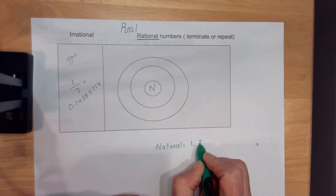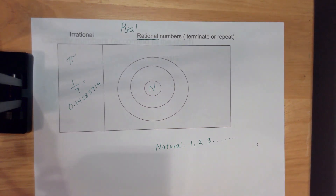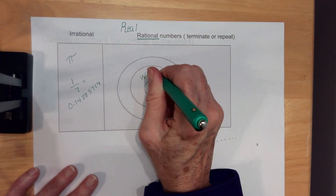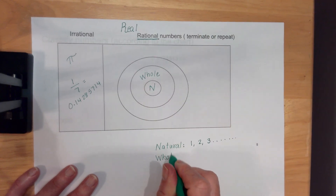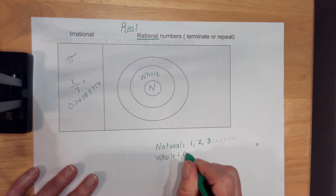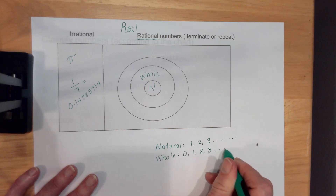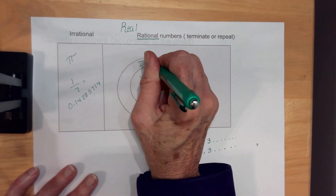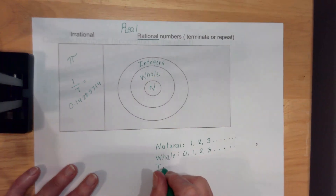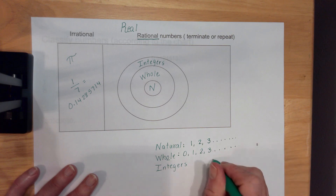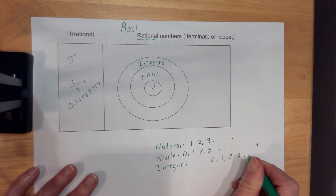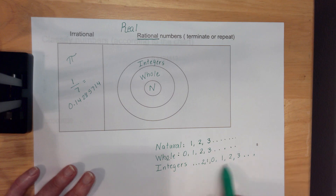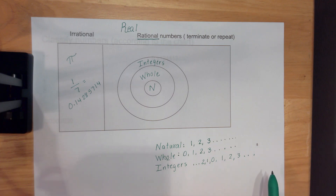Natural numbers include 1, 2, 3, and so on — they're all whole numbers, but it doesn't include any numbers smaller than 1. The next unit is called whole numbers. Whole numbers are everything natural numbers are, except it also includes 0. You can remember that because the O looks like the 0. Outside whole numbers, we have integers. Integers are positive and negative whole numbers, going in both directions. It still doesn't include fractions or decimals — they're still whole numbers.